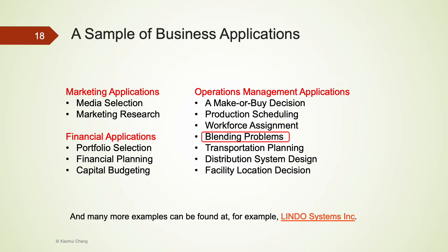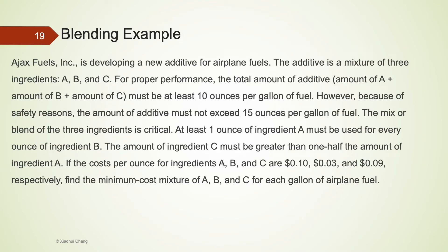The next example is a blending problem under operations management applications. Blending problems are about determining an optimal mix of ingredients. For example, oil companies must determine the least costly mix of crude oils and other chemicals to produce a certain grade of gasoline. In this example, the company needs to mix 3 ingredients to develop a new additive. The total amount of additive must be at least 10 ounces per gallon of fuel, but for safety reasons cannot exceed 15 ounces per gallon. Given the cost per ounce for the 3 ingredients, how should the company mix them to produce the additive at minimum cost?